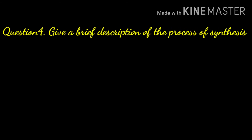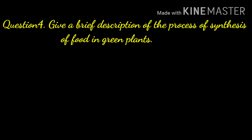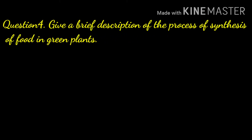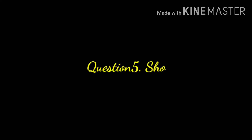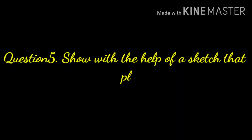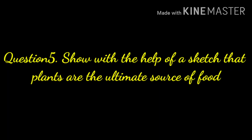Question number four: give a brief description of the process of synthesis of food in green plants. Answer: 'photo' means light and 'synthesis' means to combine. Photosynthesis is the process by which plants prepare their food. The green pigment in plants known as chlorophyll helps leaves capture the energy of sunlight. This energy is used to synthesize food from carbon dioxide and water.